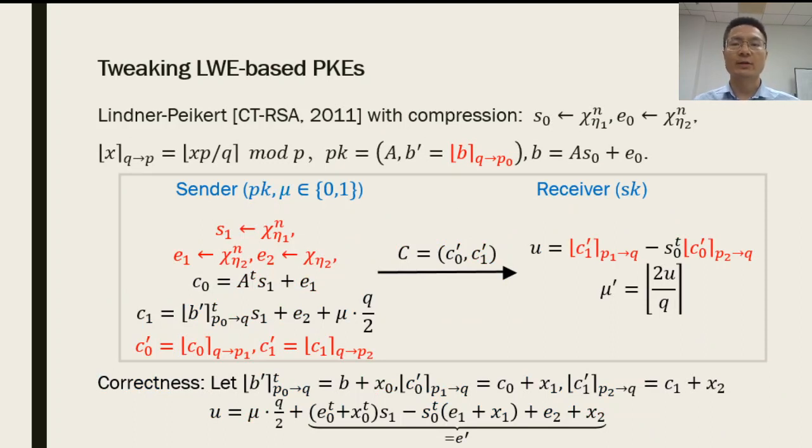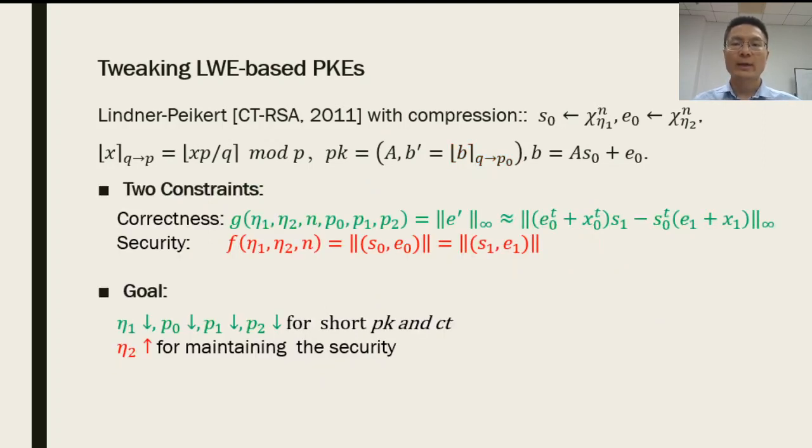Then, we can further make use of this asymmetry to obtain new schemes by using different parameters eta1 and eta2 for the secret S and E, as well as different moduli p0, p1, and p2 for the compression of public key and ciphertexts. By doing this, we can flexibly choose the parameters to achieve short public key and ciphertexts, while at the same time not significantly affect the security. Specifically, we can set smaller eta1, p0, p1, and p2 for short public key and ciphertexts, but a larger eta2 for maintaining the security.